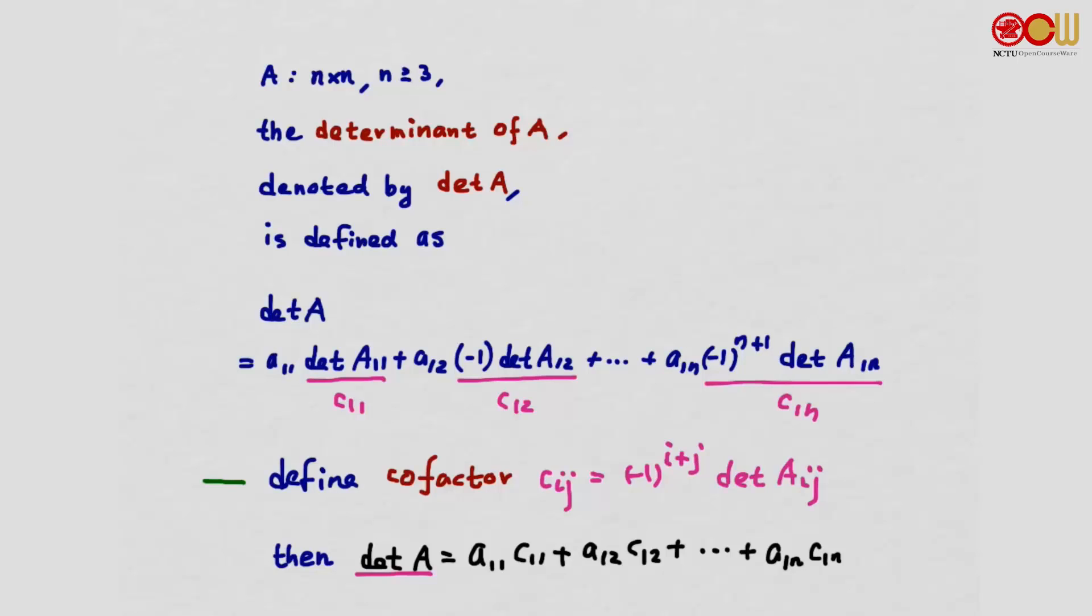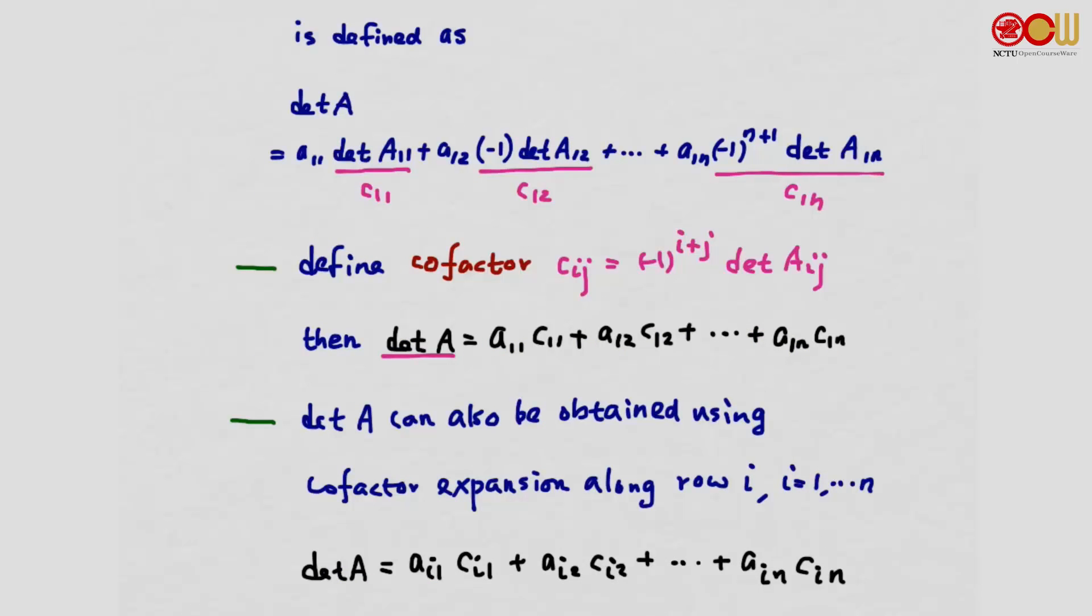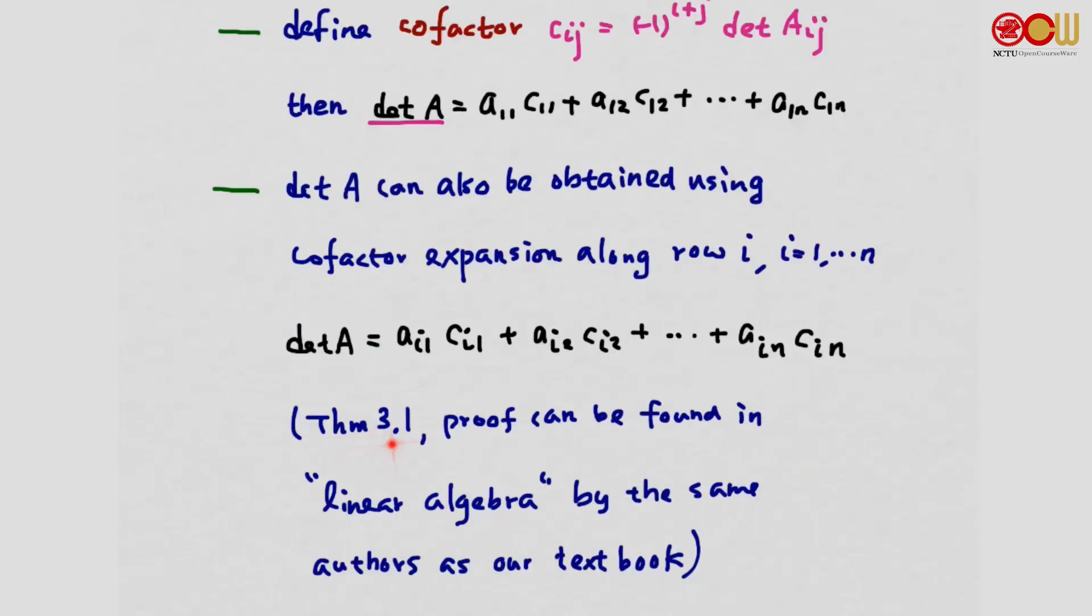We can also compute determinant of A by expanding along any row. Determinant of A can be obtained using cofactor expansion along row i, where i can be any integer between 1 and n. If we expand along the i-th row, then det A equals Ai1 Ci1 plus Ai2 Ci2 all the way to Ain Cin. This is theorem 3.1 of our textbook. The proof can be found in the book Linear Algebra by the same authors.